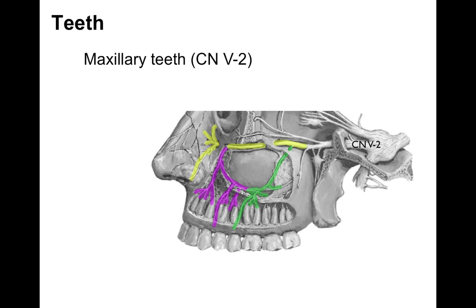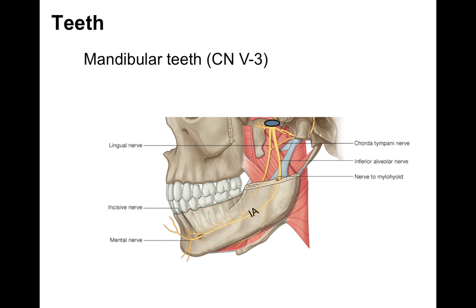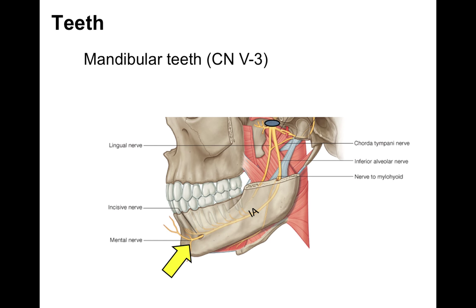Now what about the sensory innervation of our teeth? Maxillary teeth are innervated by cranial nerve V2. There we have V2, the maxillary nerve, that traverses the foramen rotundum, and as it courses through the infraorbital canal, it gives rise to the posterior superior alveolar nerve, middle superior alveolar nerve, and anterior superior alveolar nerve. The PSA innervates the posterior teeth in the maxilla, and the anterior superior innervates the anterior teeth. Now our mandibular teeth: cranial nerve V3 traverses the foramen ovale, and then the inferior alveolar nerve courses down through the mandibular foramen, enters the inferior alveolar canal, provides innervation to the mandibular teeth, and exits the mental foramen as the mental nerve.